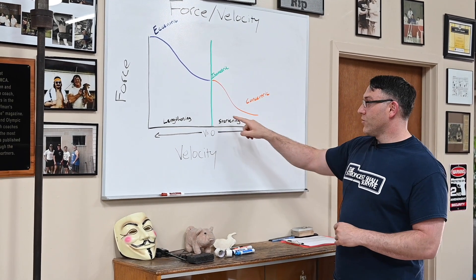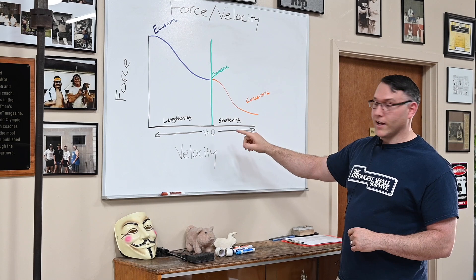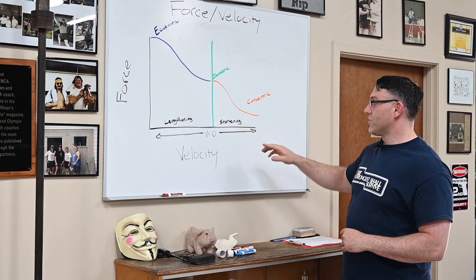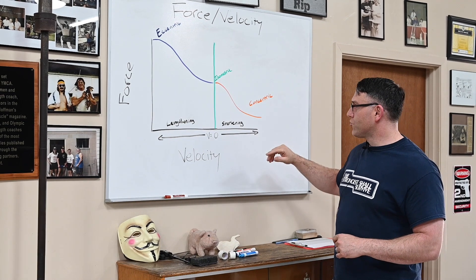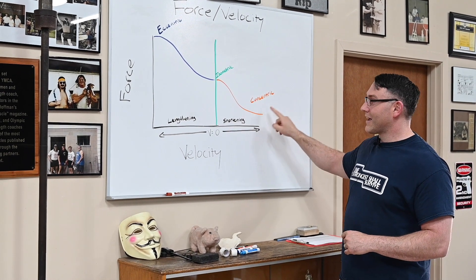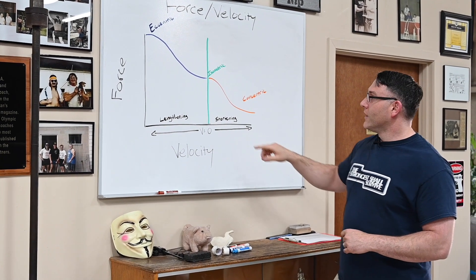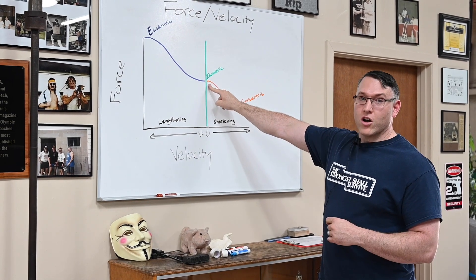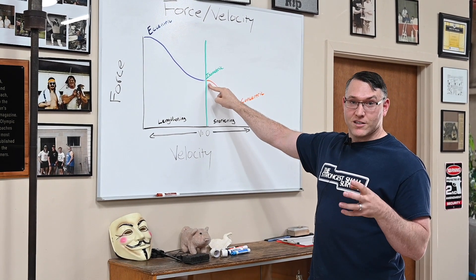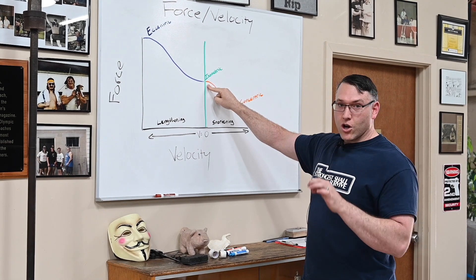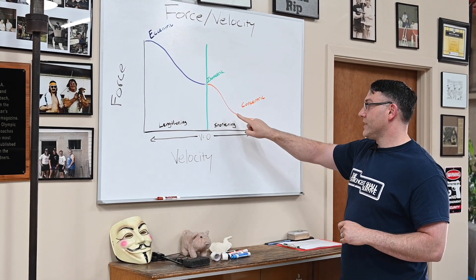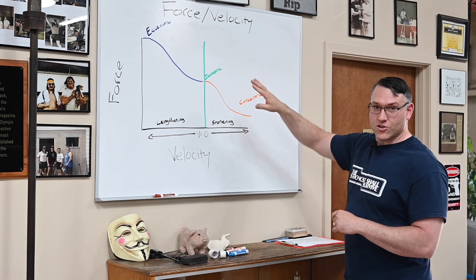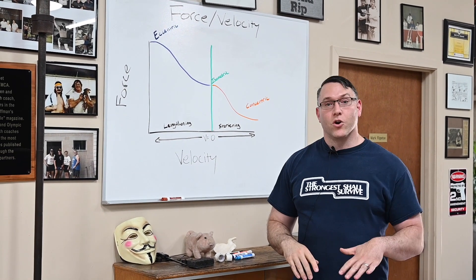On the other end we have shortening. As we move further away from zero again, we have an increasing velocity of muscle shortening occurring. This is our concentric muscle action. Concentrically we are strongest, we are able to produce the greatest amount of force at very low velocities of muscle shortening. As velocity of muscle shortening increases, our concentric force production goes down.